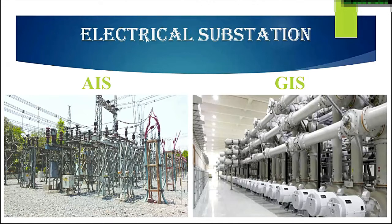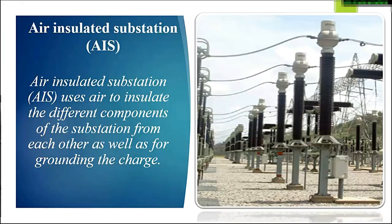There are basically two types of electrical substation: air insulated substation and gas insulated substation. An air insulated substation uses air to insulate the different components of the substation from each other, as well as for grounding the charge. These are the traditional type of substation which we have visited many times in our college days.